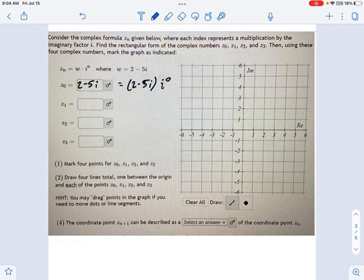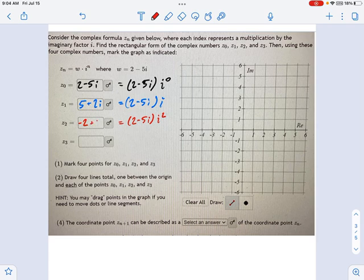I'm going to use different colors here because we have a few things to keep straight. In this next one, this is going to be 2 minus 5i times i. Okay, so what do we get here? Once you rearrange things and simplify, you'll see this is going to be equal to 5 plus 2i. Okay, let's keep going. How about this next one? This is going to be 2 minus 5i. That's the w portion. And then now we're doing i squared, which means times a negative 1. So this becomes negative 2 plus 5i.